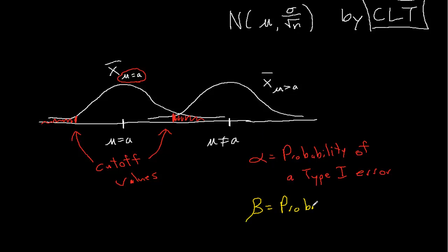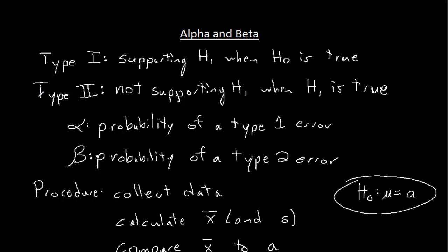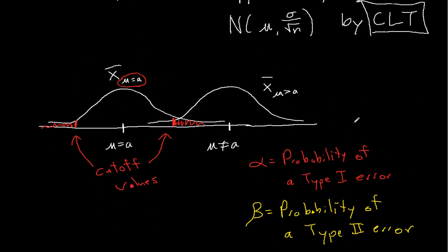Beta is the probability of a type 2 error. And what beta is, that's the probability that if the alternative hypothesis is true, whatever this value is, that's what mu is actually equal to, because that's the mean of our normal distribution for X bar, the sample mean. If the alternative hypothesis is true, then what's the probability that we still accept the null hypothesis? So beta is the probability of a type 2 error, and type 2 error is not supporting the alternative hypothesis when the alternative hypothesis is true. So the alternative hypothesis puts our sample mean in this bell curve. If these are our cutoff values, then the probability that the sample mean doesn't fall outside of those cutoff values is this yellow area here. And that's beta.